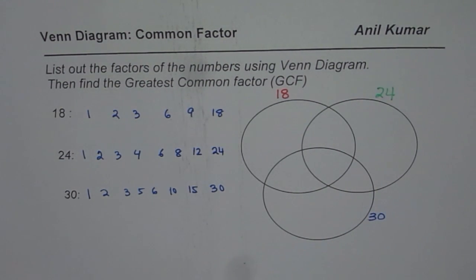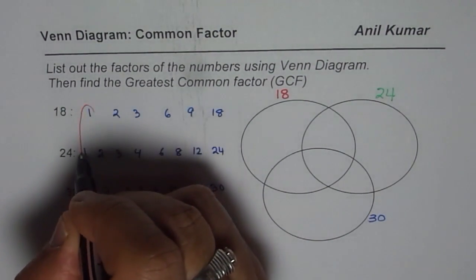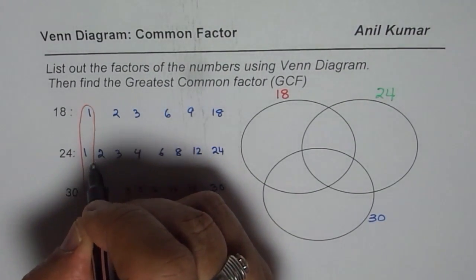Now from where should we start? First we should consider factors which are common to all and then write them down. That is actually the best way. Find the factors which are common to all.